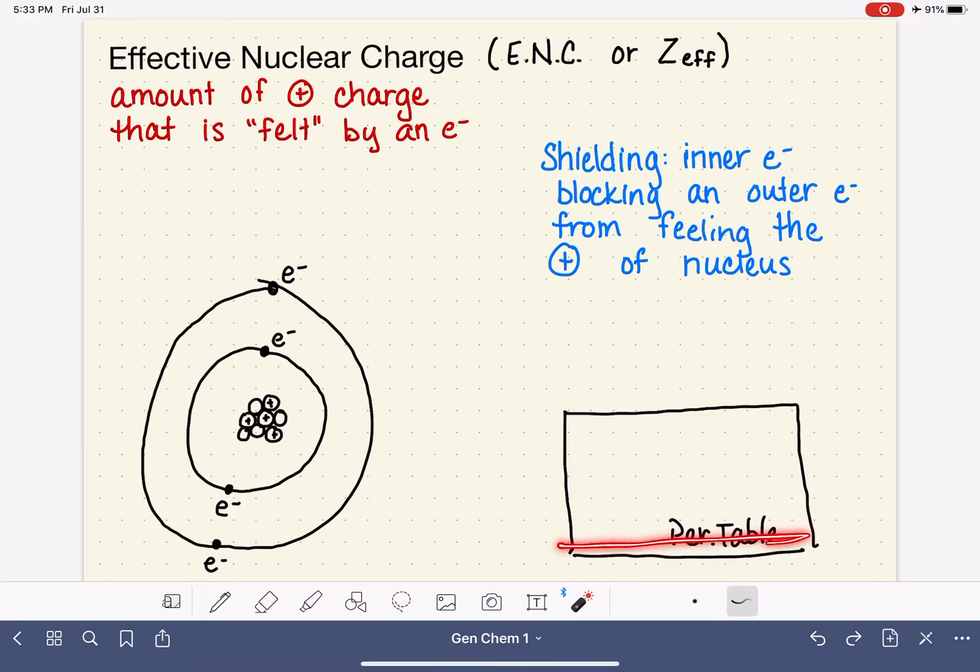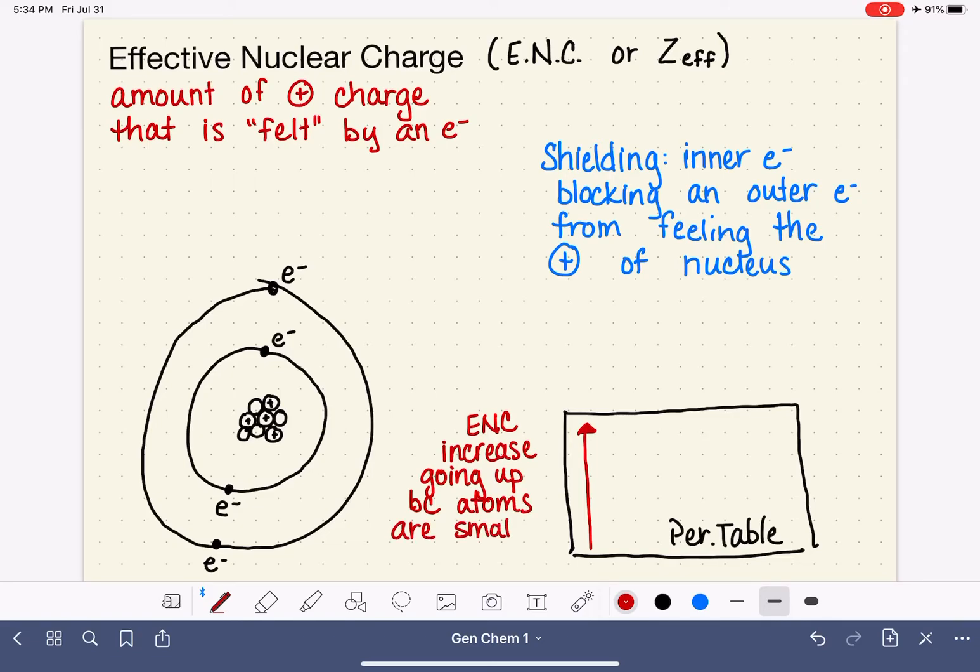So the atoms that are down here on the bottom of the periodic table, these atoms that are very large, their effective nuclear charge is actually really small. And when we draw the trend, we actually draw it in terms of the opposite direction. So we say that the effective nuclear charge increases as we go up. And this is because our atoms are getting smaller, which means that the electrons are closer to the nucleus. So they don't have a hard time feeling the charge.